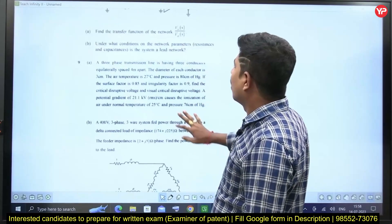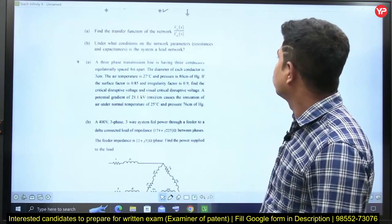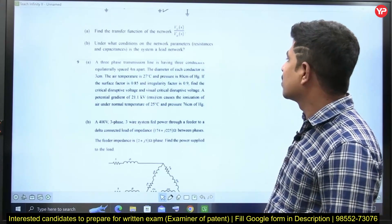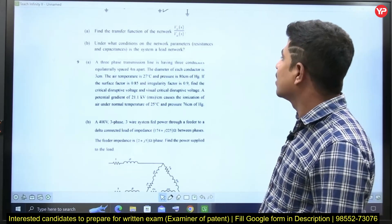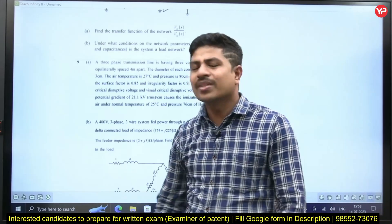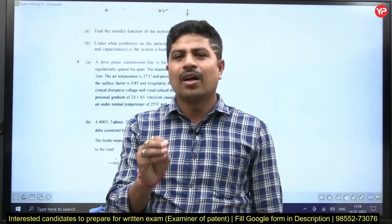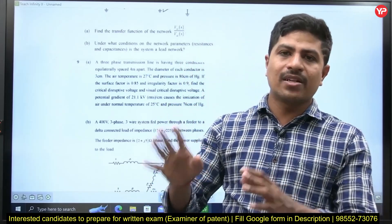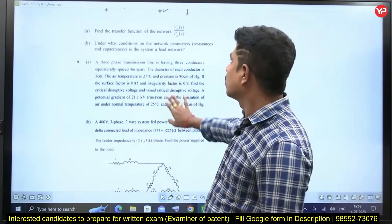Under what conditions the network parameters — resistance and capacitance of the system — make the system a lead network? Simply, he's asking what conditions must be satisfied with respect to parameters for a given circuit to act as a lead circuit.